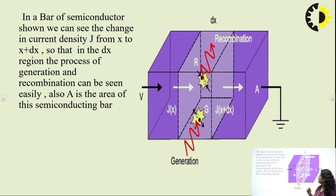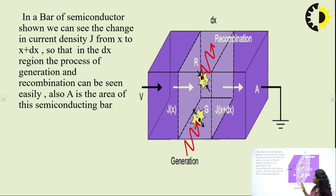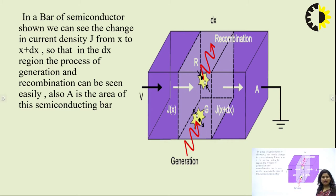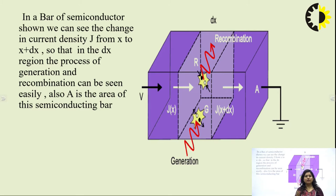Whenever the electron and hole pair combine, recombination occurs and light is emitted. Whenever carriers generate, electrical energy is produced. We have j_x at distance x and j_x+dx; the total area of the semiconductor bar is A and dx is a small length. g is the generation rate and r is the recombination rate. A positive voltage is applied to one side and negative to the other side of the semiconductor bar, causing movement of electrons from negative to positive or holes from positive to negative, leading to recombination and generation.